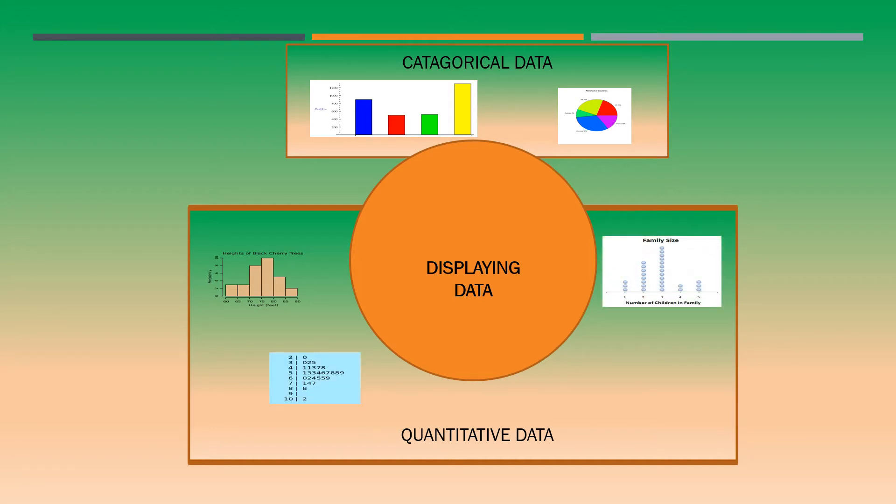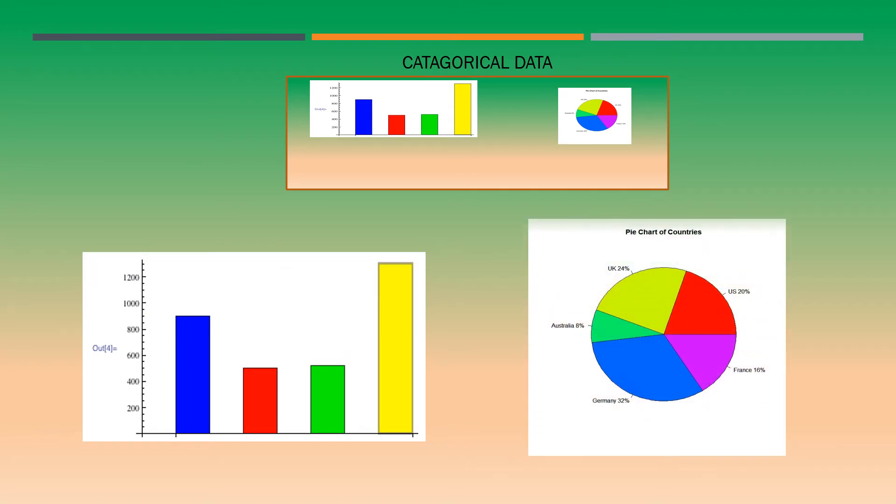For the quantitative, we have four different types of plots and for categorical we have two. For a categorical, we have two: one is a pie chart and the other one is a bar graph. The pie chart shows the relative size of each value in relation to the whole.